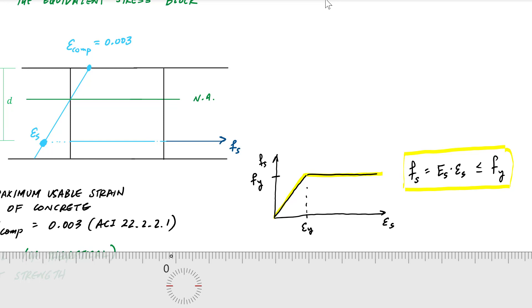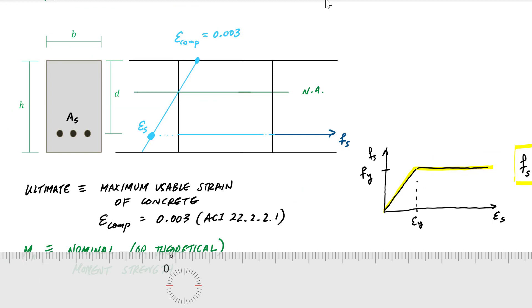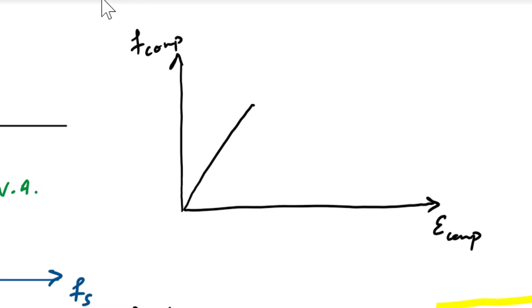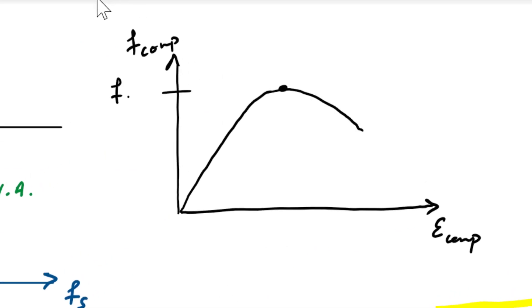The other part we need to look at is the stress distribution of the concrete in compression. I'm going to look at the strain value at each layer of the cross section, which corresponds to different points on the strain profile. Using those strain values, I can go to the stress-strain diagram of concrete in compression. We call the peak compressive strength Fc prime, and this maximum usable strain of the concrete is 0.003. Typically, the strain at which Fc prime occurs is around 0.002.